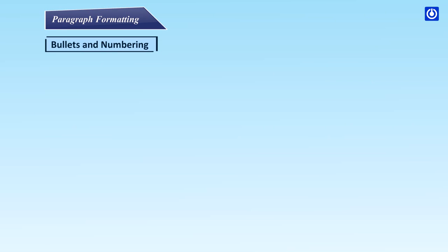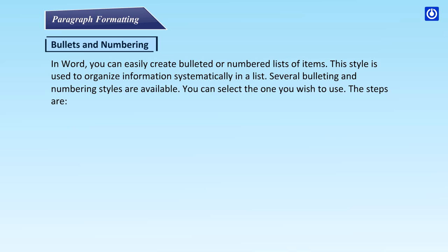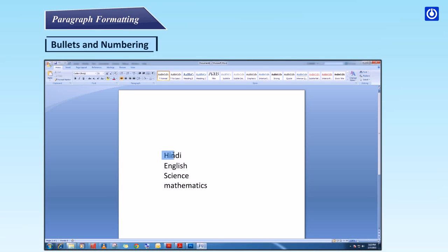Bullets and numbering: In Word, you can easily create bulleted or numbered lists of items. This style is used to organize information systematically. Several bulleting and numbering styles are available, and you can select the one you wish to use. Step 1 — Select the paragraph or place your cursor anywhere inside the paragraph. Step 2 — Click the Home tab. In the paragraph group, click on Bullets, Numbering, or Multi-level button.